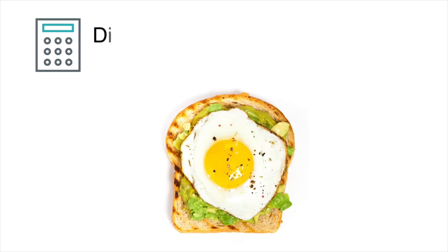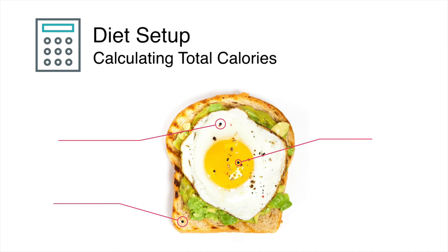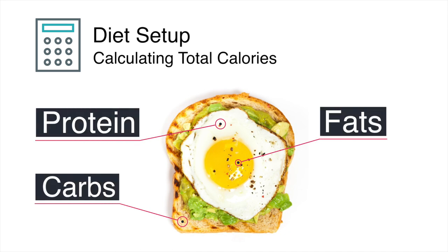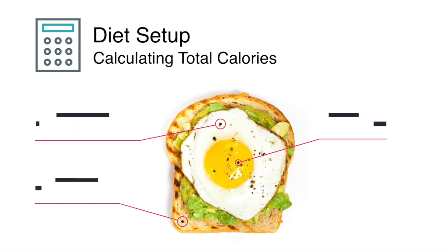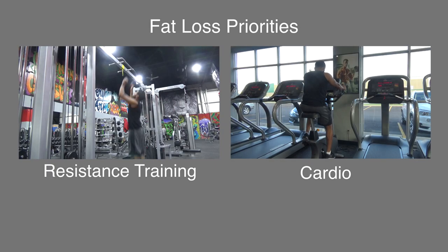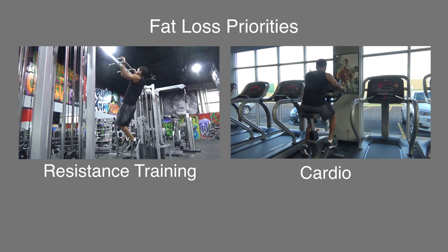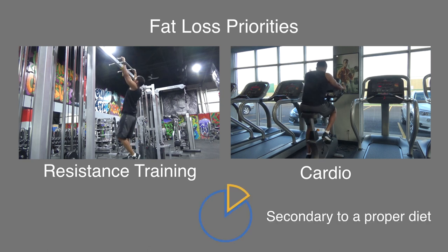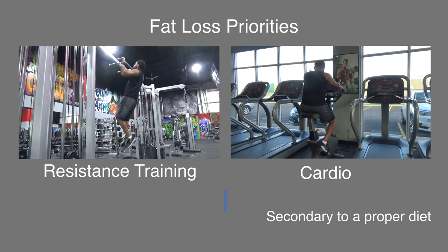This first video of the series will cover how to set up a fat loss diet. This will fully explain how to calculate total calories and distribute them into protein, carbohydrates, and fats. While resistance training and cardio are also important factors of a fat loss program and will be covered in future videos, they are secondary to a proper diet and I'll explain why later in this video.